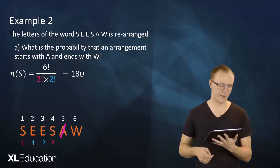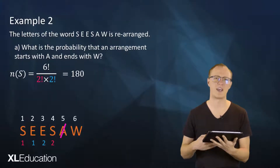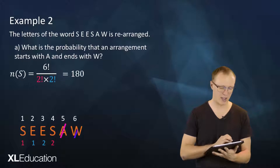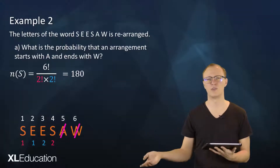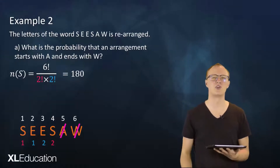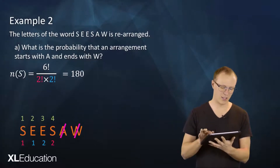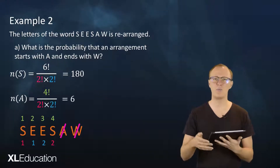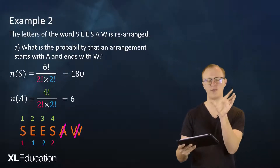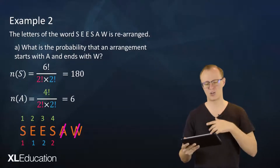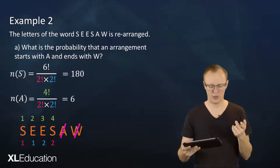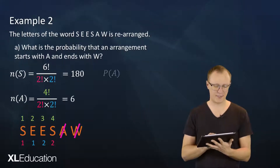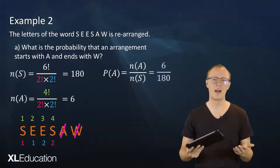Now we find how many arrangements start with A and end with W. A is fixed at the start and W is fixed at the end, so we just arrange the four remaining letters — S, E, E, S — in the middle. S is repeated twice and E is repeated twice, so the number of ways is 4! divided by 2! (for the S's) times 2! (for the E's), which equals 6. The probability is 6 divided by 180.